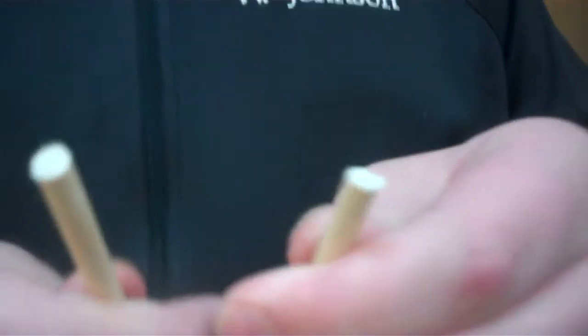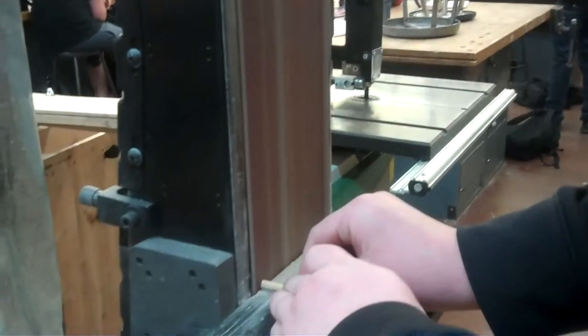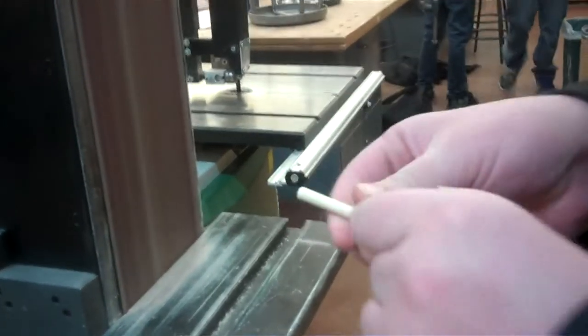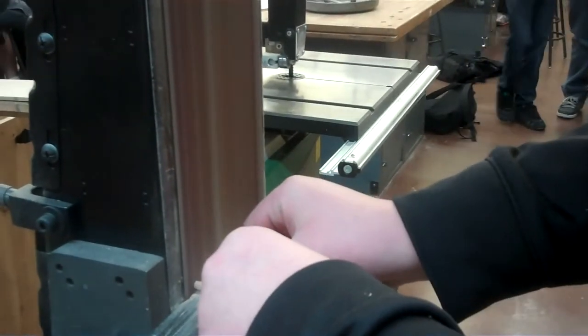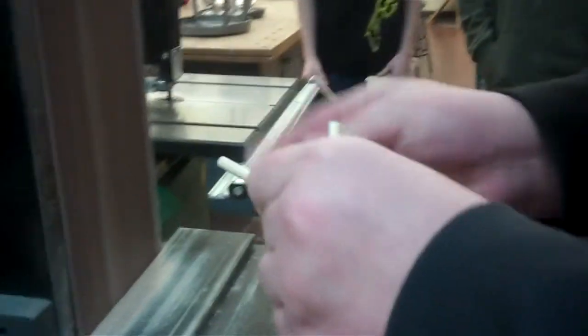And now we have our axles but they're a little ugly so we're going to come over here to the sander. Just sanding the ends of them. The wheels will fit better onto the axles if we sand the ends.